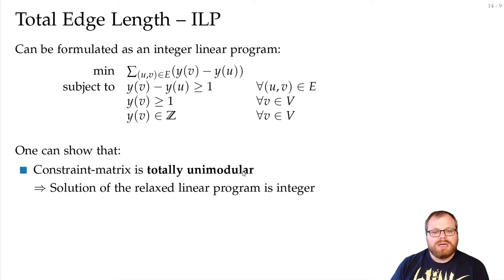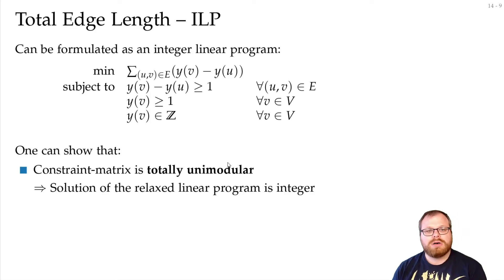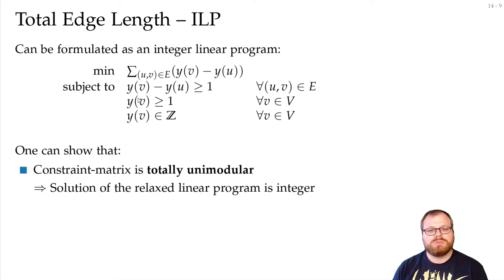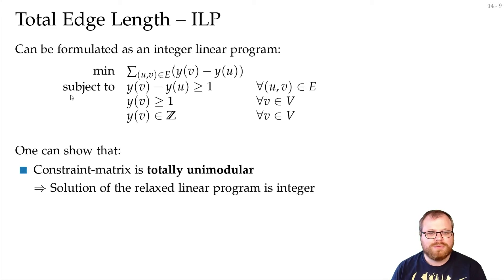A matrix is unimodular if its determinant is either minus one, zero, or one. It is totally unimodular if it is square and all of its square sub-matrices are also unimodular — so whatever square sub-matrix you take, the determinant is always minus one, zero, or one. We won't prove this here, but basically if you have many zeros and everything else is ones and minus ones, the chances are good and one can typically prove it works out.